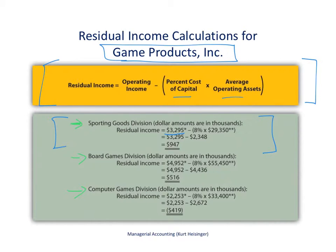Residual income for the sporting goods division is the operating income of $3,295,000 minus 8% times the average operating assets of $29,350,000. That gives us a capital charge of $2,348,000. Subtracting that from the operating income means we have residual income of $947,000. That's how we find the residual income for the sporting goods division.